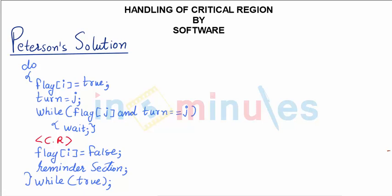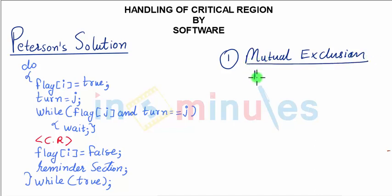After understanding Peterson's algorithm, let's try to understand how the system works with reference to three main parameters. For mutual exclusion, in this algorithm mutual exclusion is achievable because at a time only one process can enter.